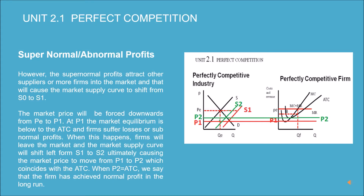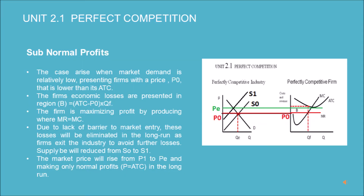The supernormal profits attract other suppliers or more firms into the market, causing the market supply curve to shift from S0 to S1. The market price is forced downwards from P_e to P1. At P1, the market equilibrium is below the ATC and firms suffer losses or subnormal profits. When this happens, firms leave the market and the supply curve shifts left from S1 to S2, causing the market price to move from P1 to P2, which coincides with the ATC. When P2 equals ATC, the firm has achieved normal profit in the long run.